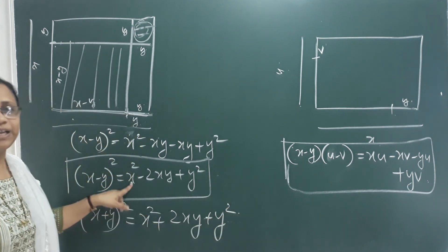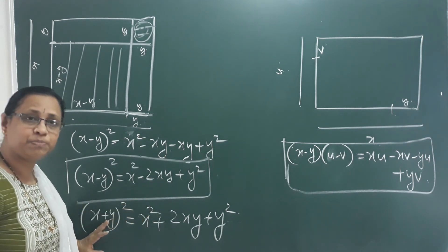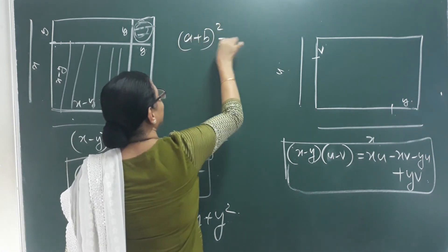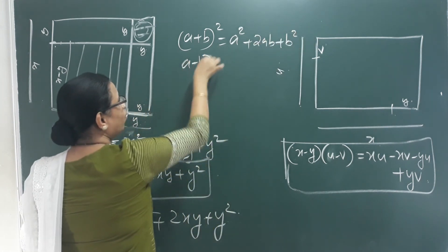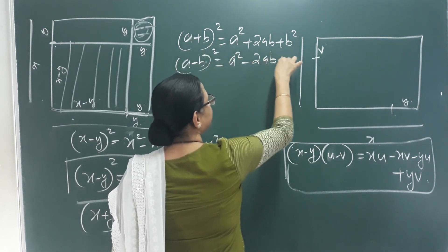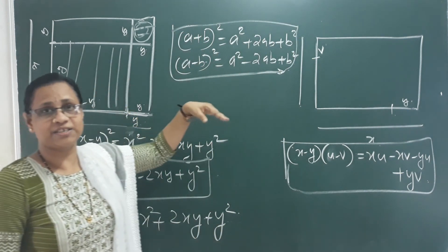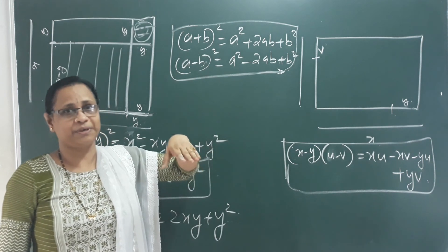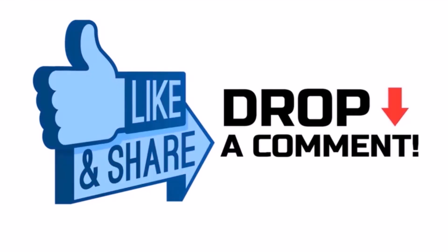We also know that x plus y whole square equals x squared plus 2xy plus y squared. So we have two identities: a plus b whole square equals a squared plus 2ab plus b squared, and a minus b whole square equals a squared minus 2ab plus b squared. These are our two algebraic identities.